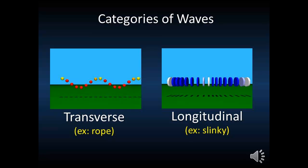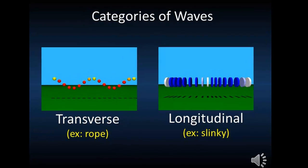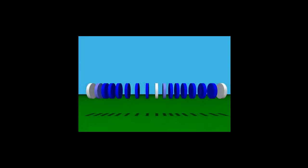In the previous video we considered the transverse wave. Now let's look at the longitudinal wave. This is a wave in which the particles of the medium, demonstrated by the coils in this animation, travel left and right parallel to the direction that the wave propagates.